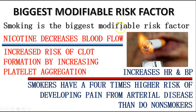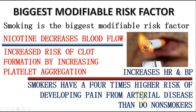Smoking is the biggest modifiable risk factor. Nicotine itself decreases blood flow. It increases the risk of clot formation by increasing platelet aggregation. It also increases heart rate and blood pressure. Smokers have a four times higher risk of developing pain from arterial disease than nonsmokers. So this is the biggest modifiable risk factor.